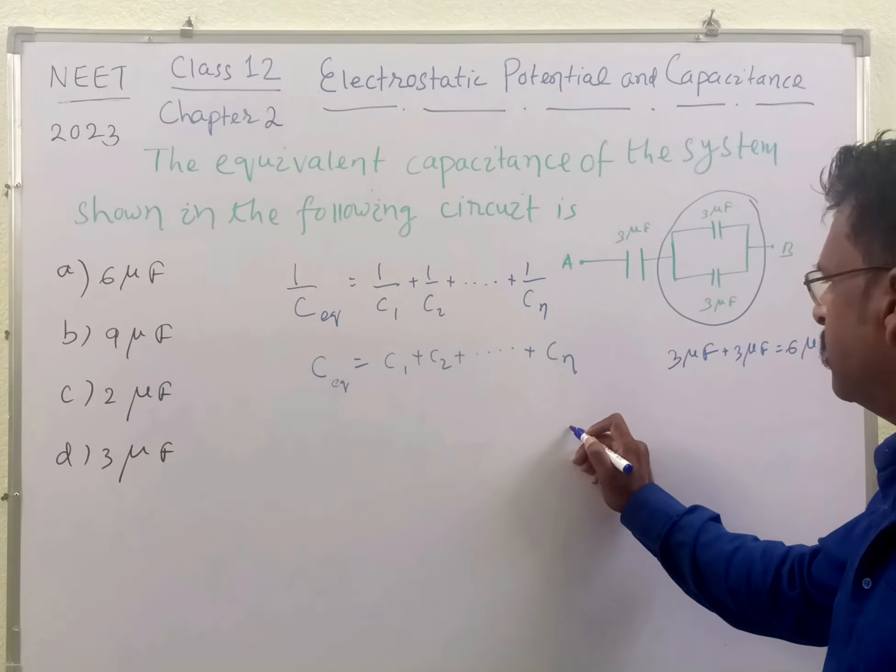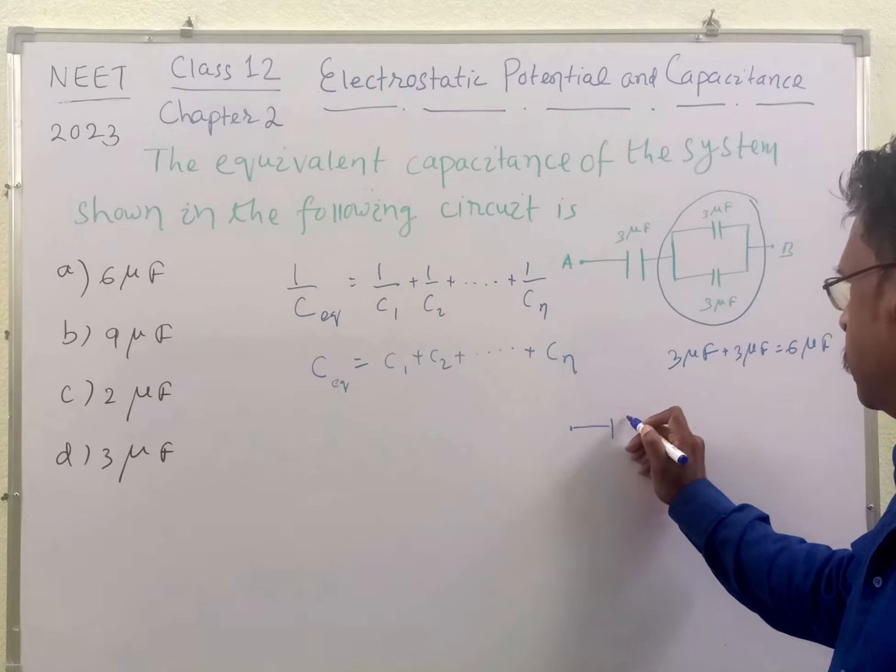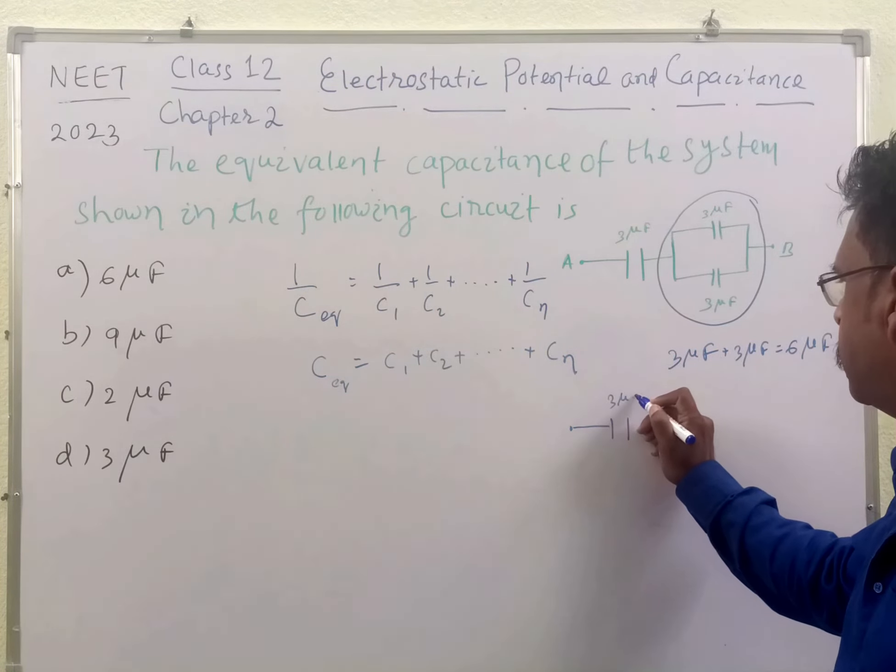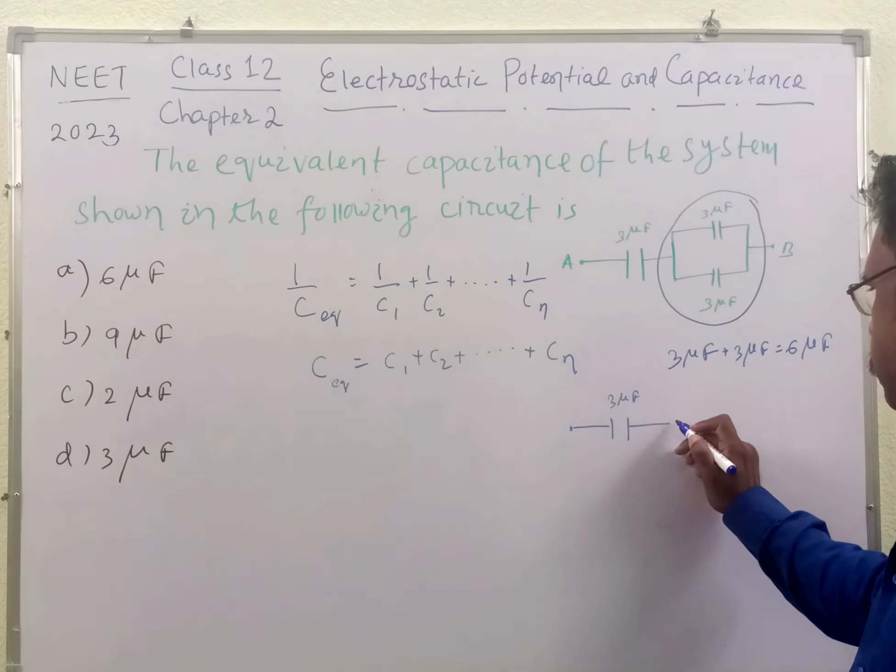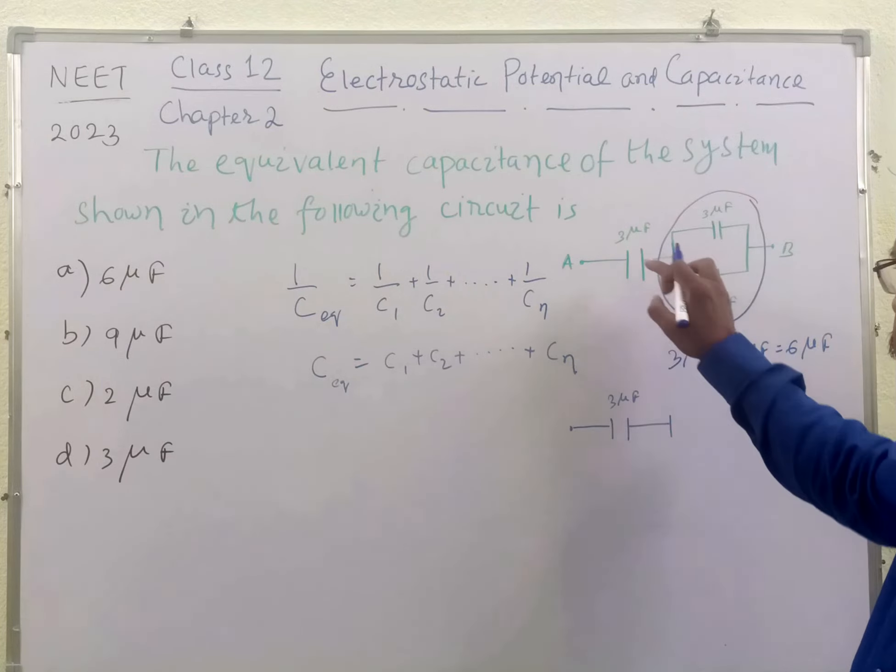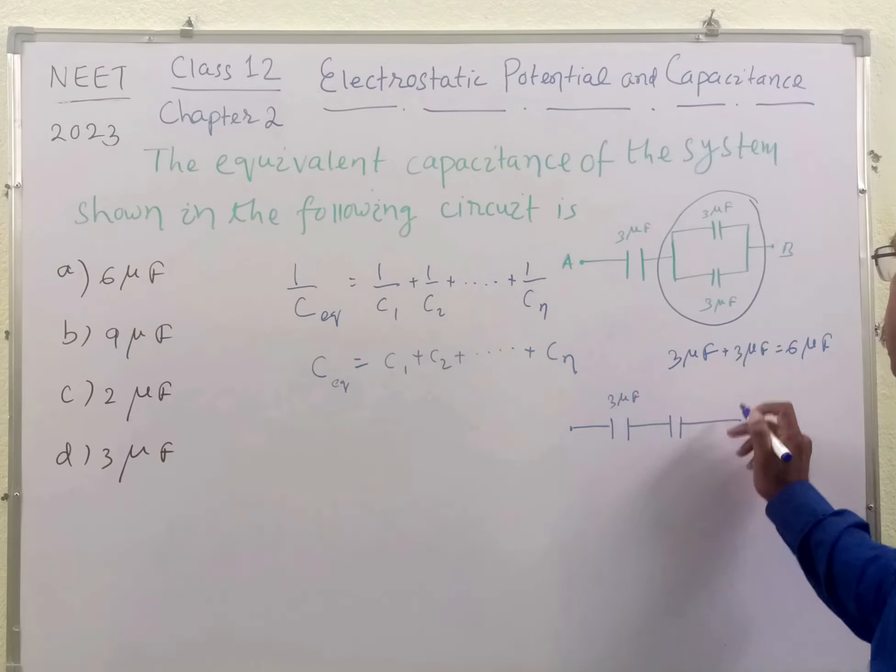So we may also write this as 6 micro Farad, and this is in series connection with this 3 micro Farad. What is this equivalent?